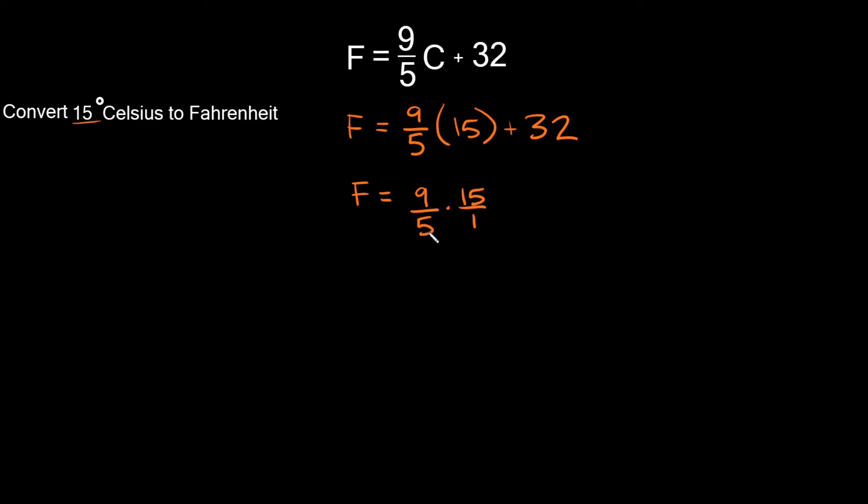Now cross-canceling. 5 divides evenly into 15 three times, and it divides into itself one time.